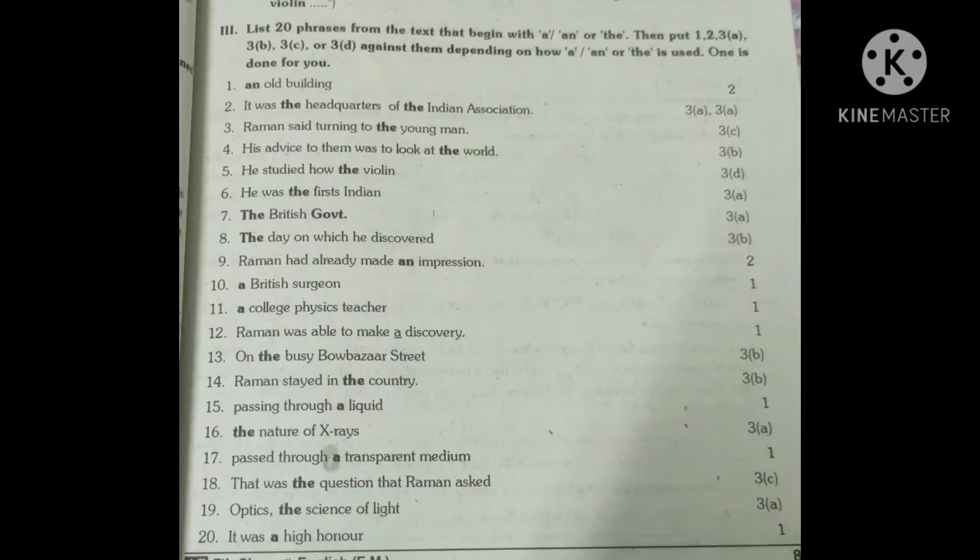Look here children. Observe this slide. List 20 phrases from the text that begin with a, an or the. Then put 1, 2, 3a, 3b, 3c or 3d against them depending on how a, an or the is used. One is done for you.